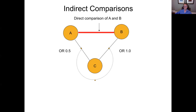What distinguishes a network meta-analysis from a conventional meta-analysis is obviously that it's not just pairs — it's three or more treatments. But what else distinguishes it is that we rely in the network meta-analysis not only on the direct comparisons between interventions, but on indirect comparisons. What do we mean by indirect comparisons? We're interested in A versus B. We may or may not have direct evidence, but we can also make inferences about A versus B from the relation between A versus C and B versus C.